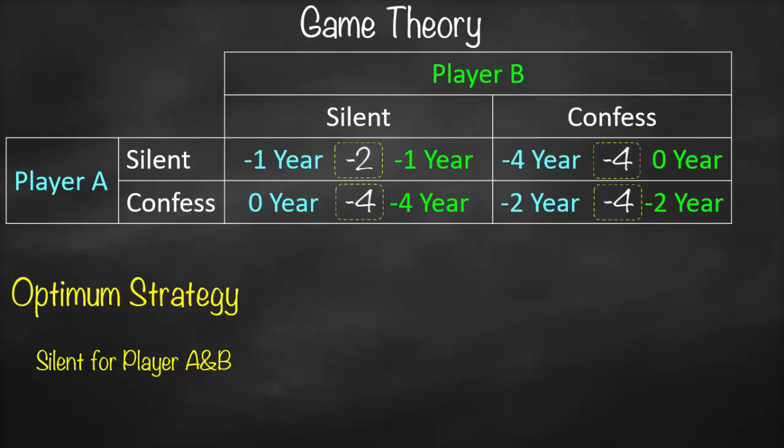If player A stays silent and player B confesses, negative four plus zero is negative four. If both confess, negative two plus negative two is also negative four. So which outcome has the lowest total years in prison? Negative two is bigger than negative four, meaning both staying silent is the best combined outcome. Therefore, the optimal strategy is for both prisoner A and prisoner B to stay silent.